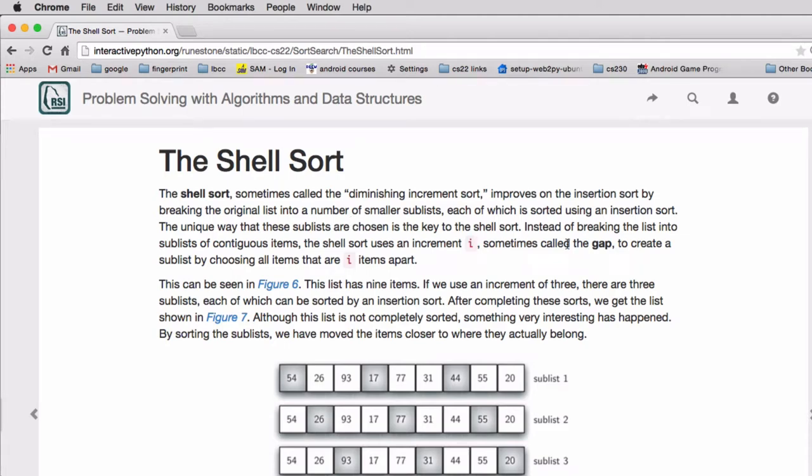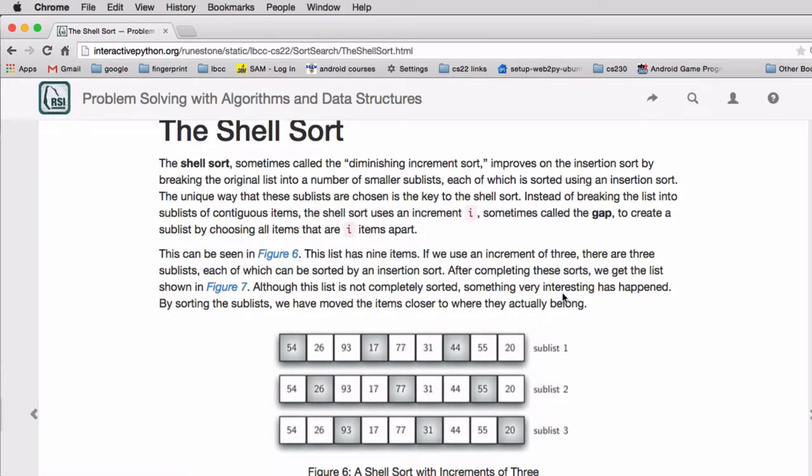Okay, now we're going to look at a much more complex type of sort. This is called a shell sort. It actually is usually better than O of n squared, but it uses an insertion sort as part of it that we just covered.